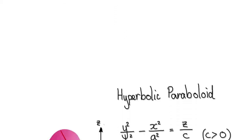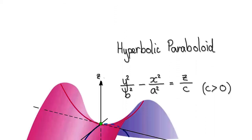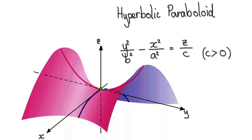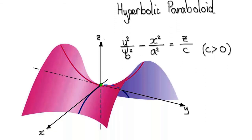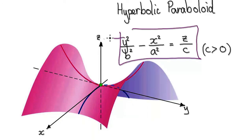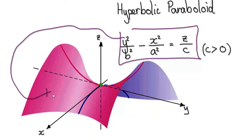In this video, we're going to try and understand why an equation of this form will yield a surface looking like this.